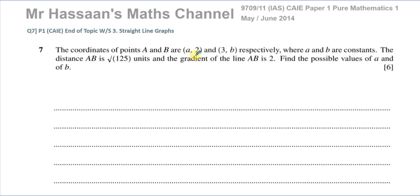It says the coordinates of the points A and B are (a, 2) and (3, b) respectively. So point A has the coordinates (a, 2), and point B has the coordinates (3, b). The distance AB is the square root of 125 units, and the gradient of AB is 2. Find the possible values of a and b. So we're going to form two equations from these two bits of information.